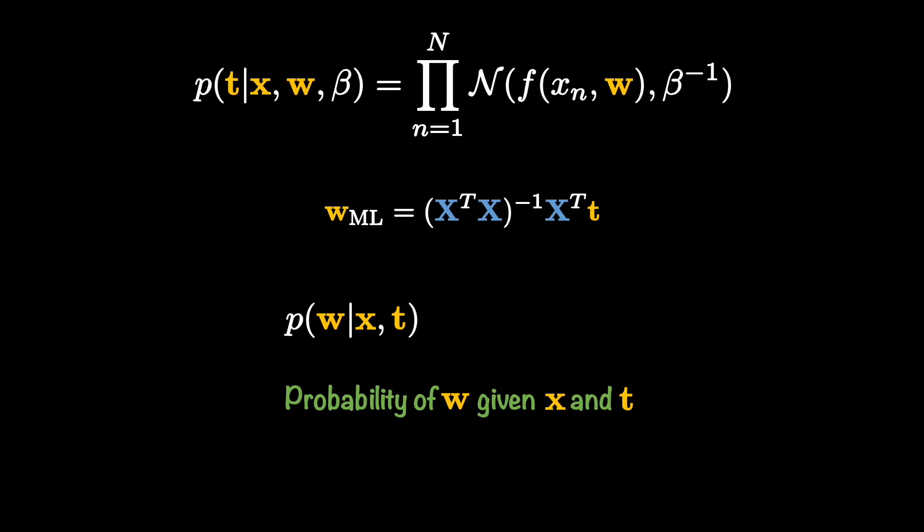With this quick overview of Bayes rule out of the way, we can see the conditional distribution of weight vector given X and T as the posterior. And it is proportional to the product of likelihood and prior on W.